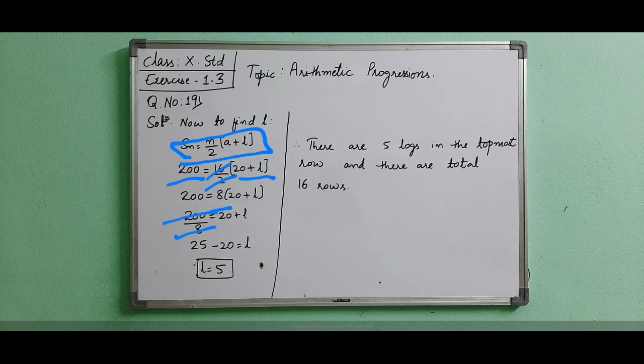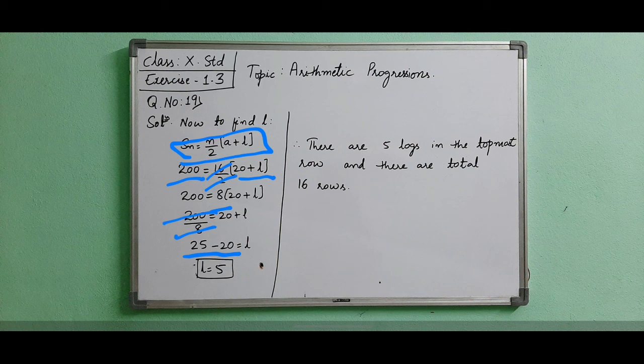Plus 20 when we are shifting becomes minus 20. 25 minus 20 equals l. So the last term, the last row will have 5 logs.